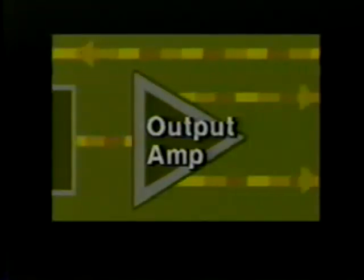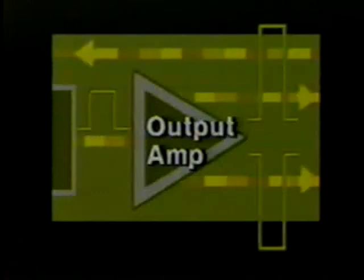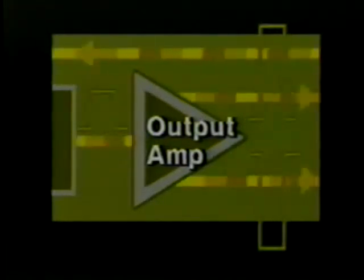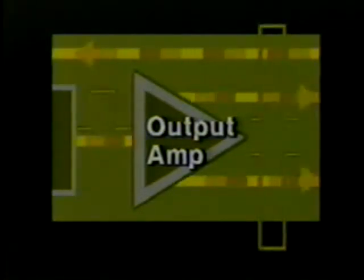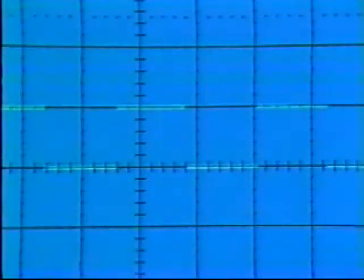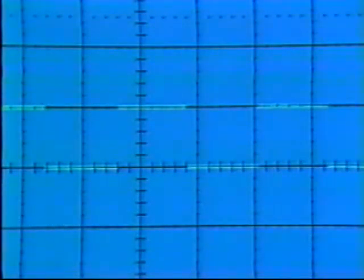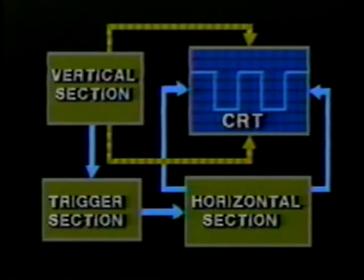The next block, the vertical output amplifier, provides additional amplification of the signal. Compared to the levels of some input signals, it takes a much larger voltage to deflect the signal vertically on the CRT — typically anywhere from two to ten volts to deflect the beam one major division. So if the incoming signal is only 10 millivolts, it'll need a large amount of amplification: an amplification factor of 1000 to show a CRT display of one division. From the vertical output amplifier the signal is applied directly to the CRT's vertical deflection plates.